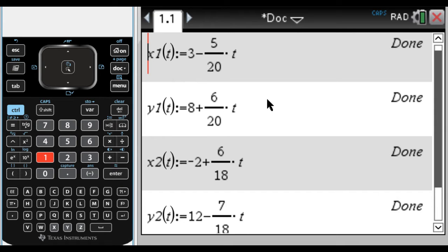So I have x1(t) = 3 - 5/20·t, and y1(t) = 8 + 6/20·t, and then x2 is -2 + 6/18·t, and y2 is 12 - 7/18·t. So object one is going to take 20 units of time, so I usually say seconds, to complete its motion, and object two takes 18 seconds to complete its motion.